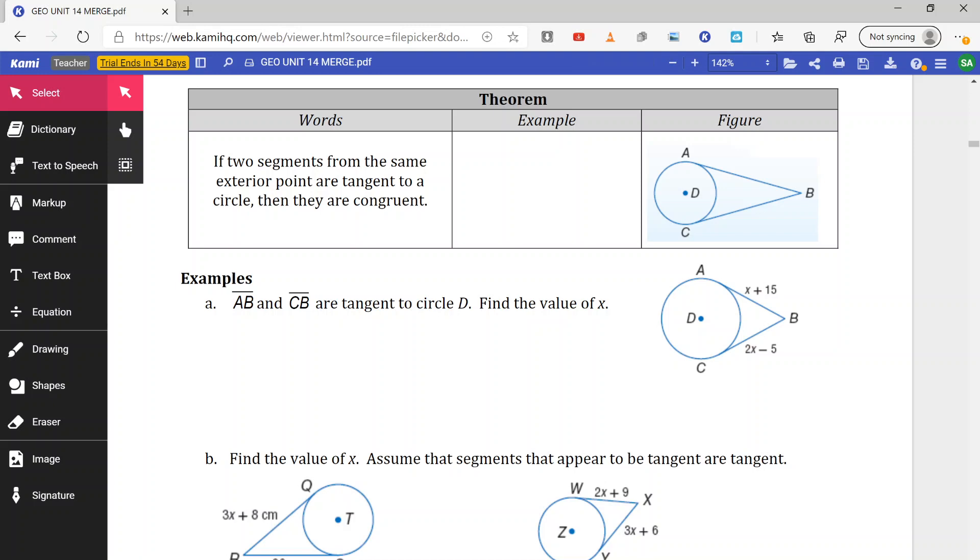Now, what about tangents where I have a point of intersection on the outside of a circle? Well, there is a theorem. So if two segments from the same exterior point are tangent to a circle, then they are congruent. So here we have the same exterior point B. As long as segment BA is tangent at point A and BC is tangent at point C, that means they are going to be congruent. So AB is congruent to BC. Congruent means they are the same.